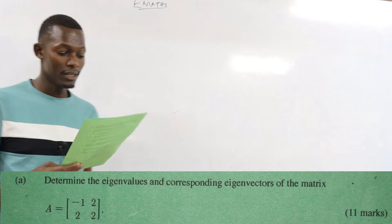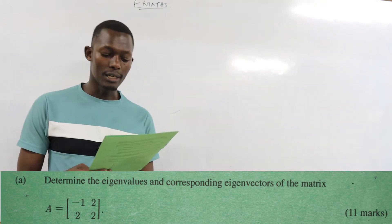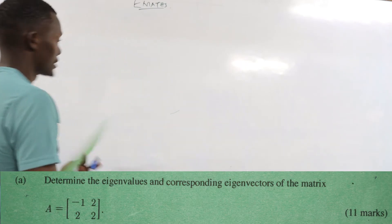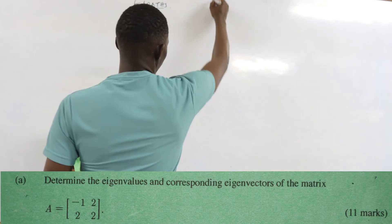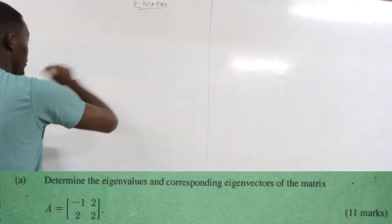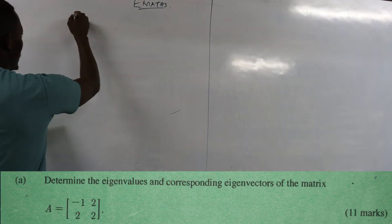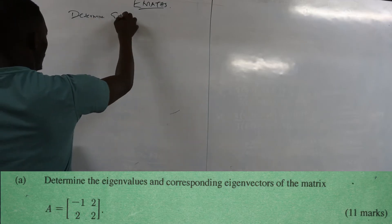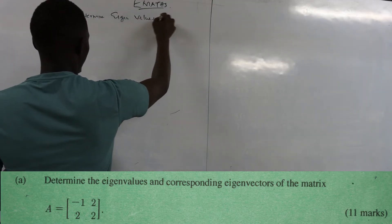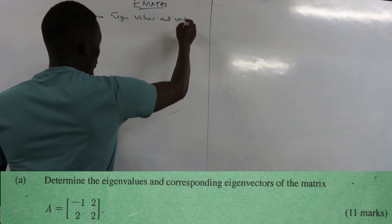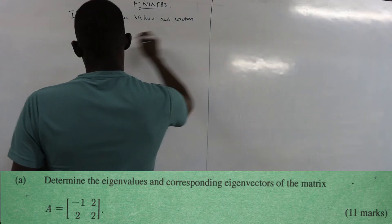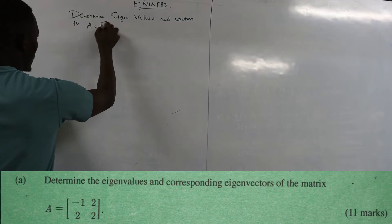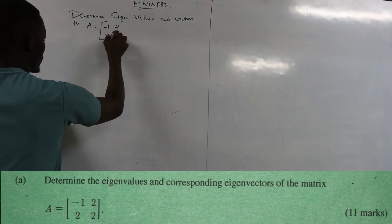Let us jump right into question number two A. The question says: determine the eigenvalues and corresponding eigenvectors of the matrix. We are determining eigenvalues and eigenvectors corresponding to matrix A, where matrix A is given by: negative one, two, two, two.